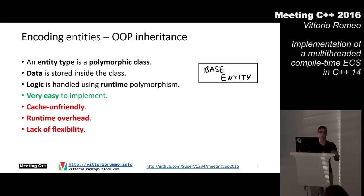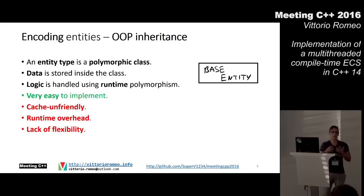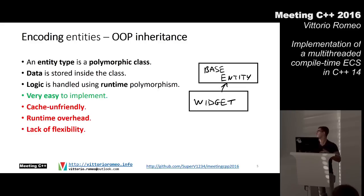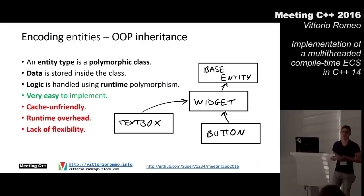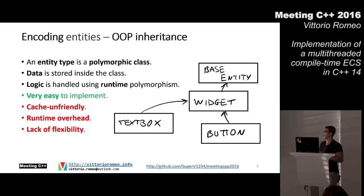Entity systems and the Entity Component System pattern allow us to manage entities in an efficient and convenient way. There are many ways to encode entities. Probably the most basic is using OOP inheritance, where the entity type is a polymorphic class. We store data inside the class itself and handle logic using virtual functions and runtime polymorphism. This is easy to implement but unfortunately not cache-friendly, since memory is not in a contiguous array, and it has runtime overhead due to virtual functions.